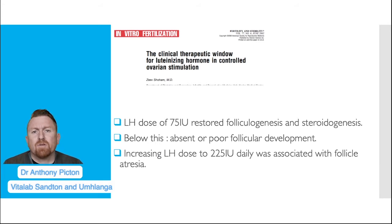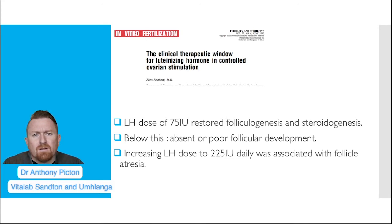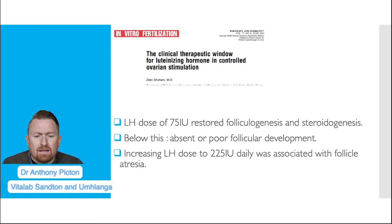Looking at the therapeutic window for recombinant LH in hypogonadotropic patients, at least 75 international units of recombinant LH are required in addition to recombinant FSH to allow for folliculogenesis and adequate estrogen synthesis. Without this LH activity, below that level, we start to have a reduction in estrogen levels and inefficient folliculogenesis. It would appear that 150 units of recombinant LH has an advantage over 75 units. But once we get to 225 international units daily of recombinant LH, we are actually going backwards — that's associated with follicular atresia and paradoxically a reduction in estrogen levels.